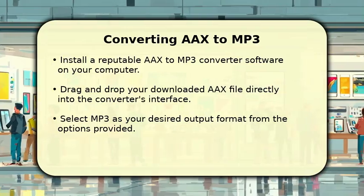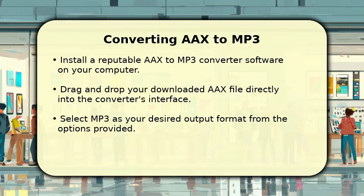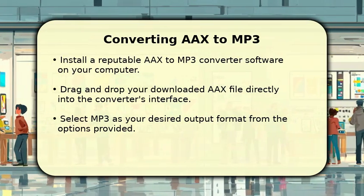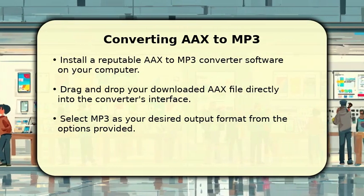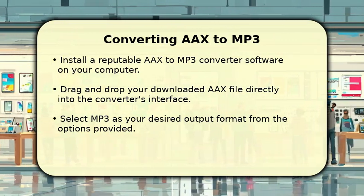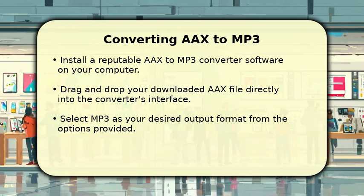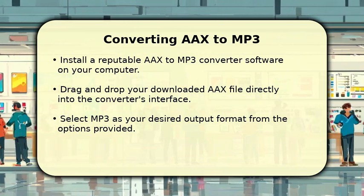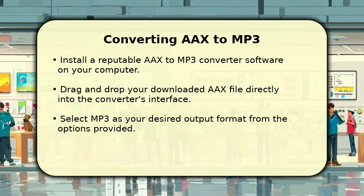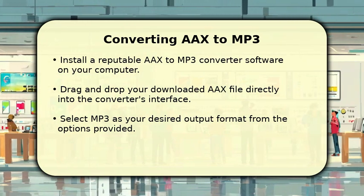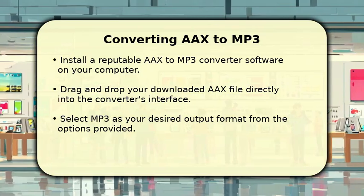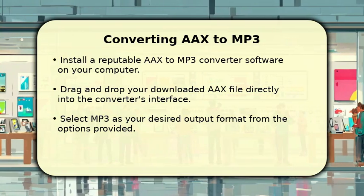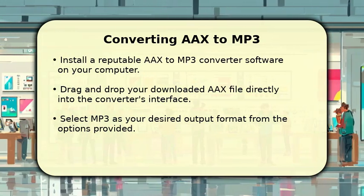Now, open your installed AAX to MP3 converter software. You can easily drag and drop the downloaded AAX file directly into the program window. Next, make sure to select MP3 as your target output format.